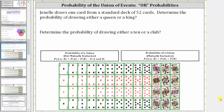Janelle draws one card from a standard deck of 52 cards. Determine the probability of drawing either a queen or a king, then determine the probability of drawing either a 10 or a club. In this video, we will determine the probabilities using the appropriate formula based upon whether the events are mutually exclusive or not mutually exclusive.